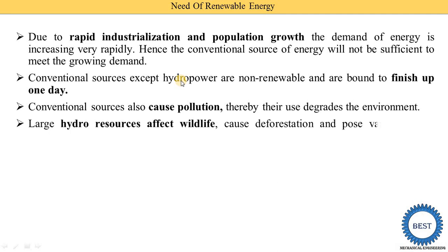Large hydro resources affect wildlife, cause deforestation, and pose various social problems. When we build a dam on a river to store water and produce electricity by running water turbines, storing that water affects wildlife. Deforestation also occurs because trees need to be cut, and if villages are located in the reservoir area, social problems are also created.